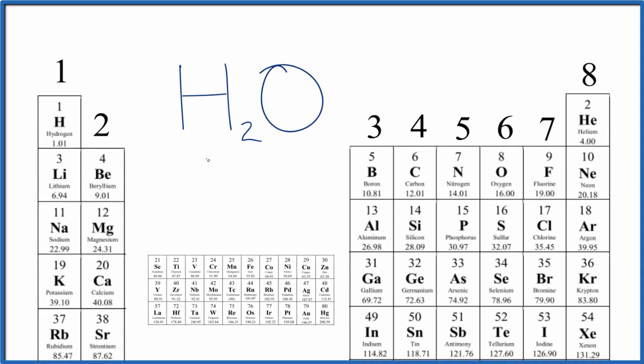To find the number of valence electrons for H2O, that's water, we're going to use the periodic table here with the number of valence electrons written in.